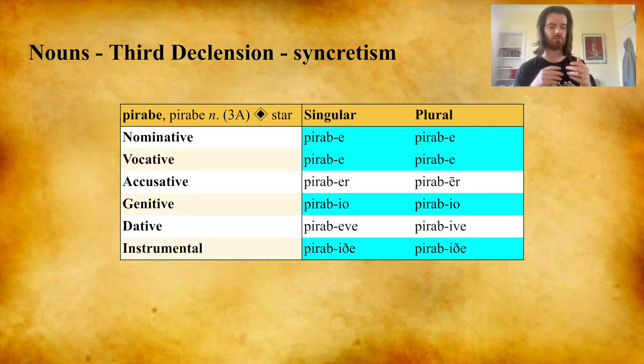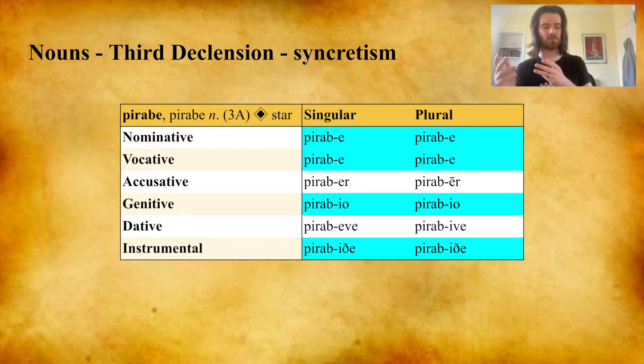This doesn't happen in the accusative, so you have the difference between Piraber and Pirabear, and in the dative the singular is Pirabeve and the plural is Pirabeve. If the nominative singular and nominative plural are exactly the same, how can you tell them apart? There's an interesting rule that affects third declension nouns called the forward stress rule. It tells us that for the nominative, vocative, genitive and instrumental — which are identical in the singular and plural — the singular will have the stress where you expect it to fall, and the plural will have the stress moved forward towards the end of the word by one syllable.